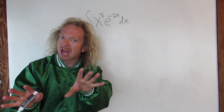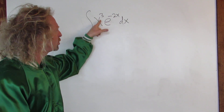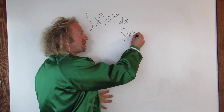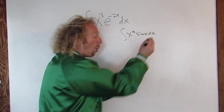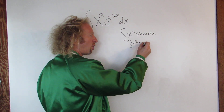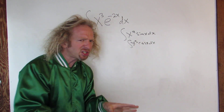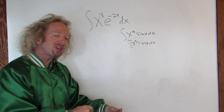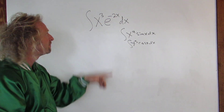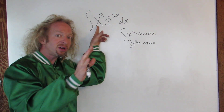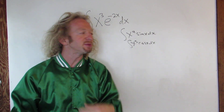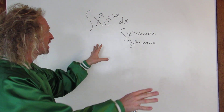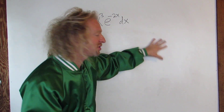So first of all, when can you use tabular? Well, when you have something like x to a power times an e, or x to a power times a sine function, or x to a power times a cosine function. These are the three most common cases where you would want to use tabular integration to save yourself tons of work. The other way to do it, besides tabular, would be to use integration by parts — three, four, or even five times. So it's ridiculous! So instead of doing that, let's use tabular.